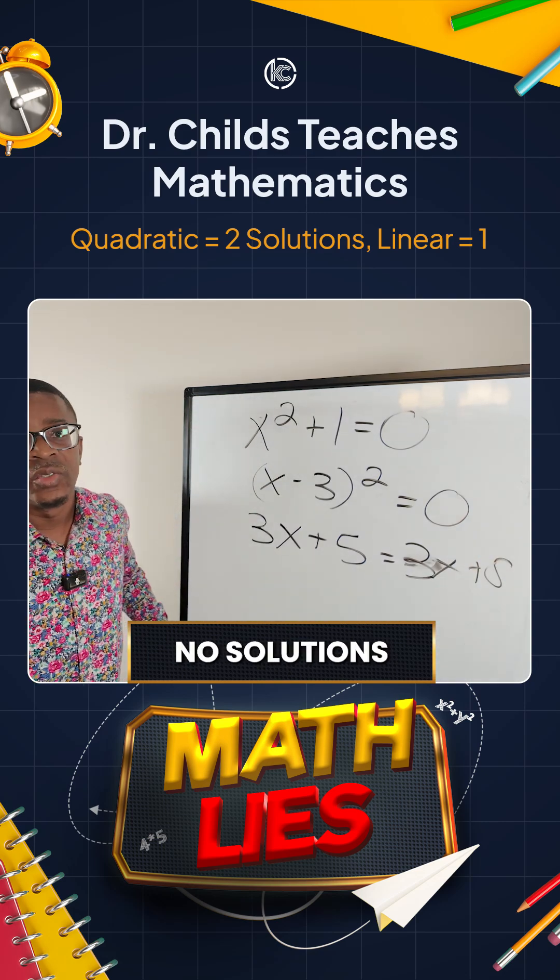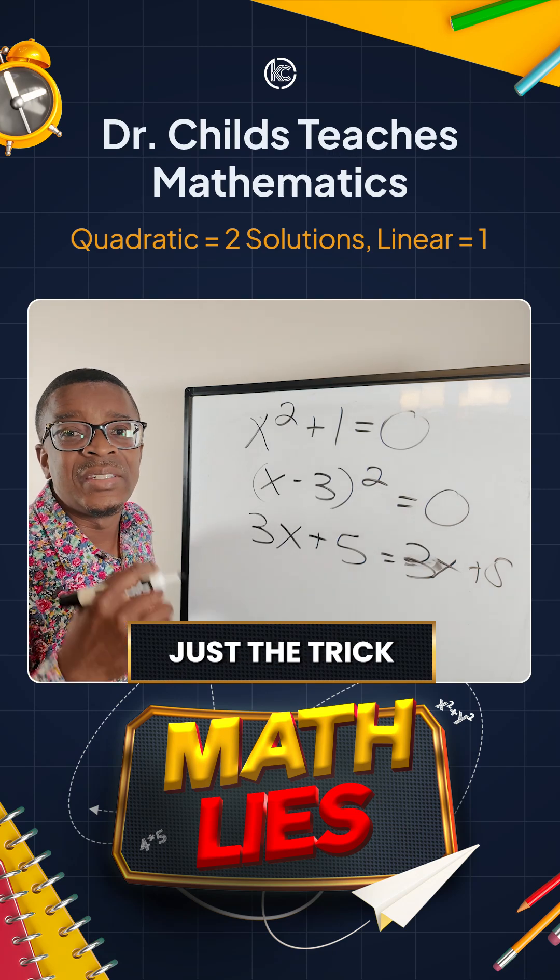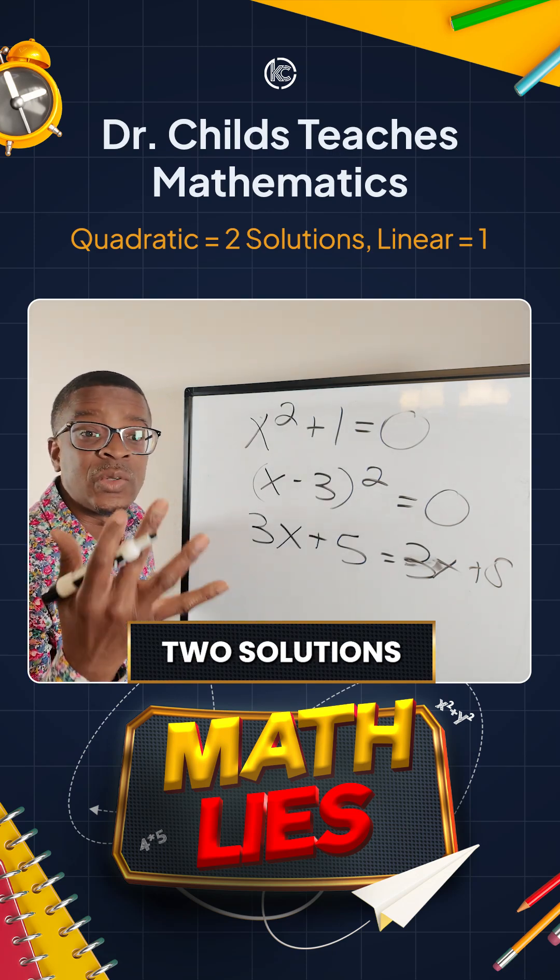For this one, I'm going to get no solutions. Why is that important? I need to get beyond just the trick that I'm either going to get two solutions or one solution.